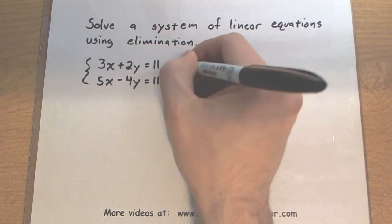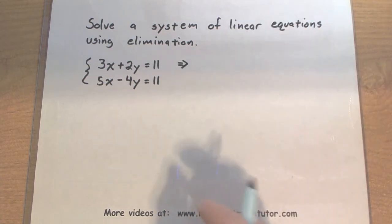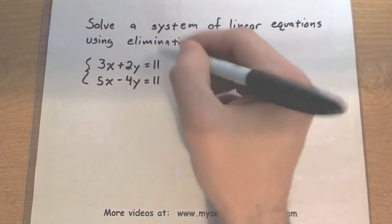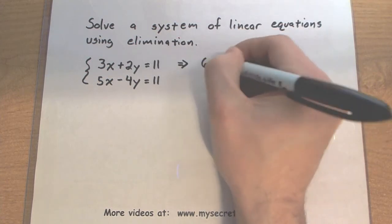So to make them eliminate, we're going to adjust one of these equations just a little bit. I'm going to take this first equation here and multiply it through by 2.